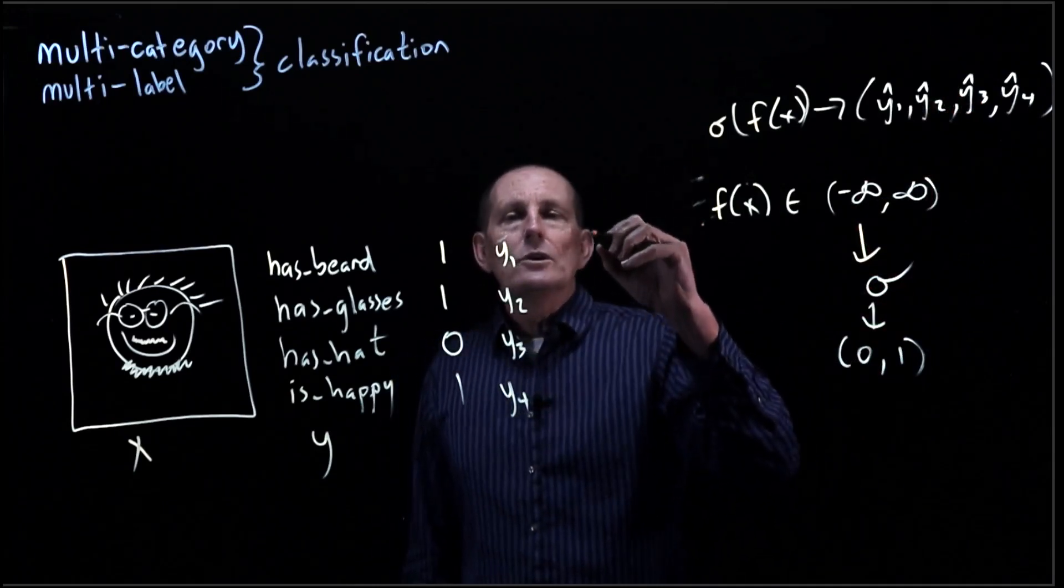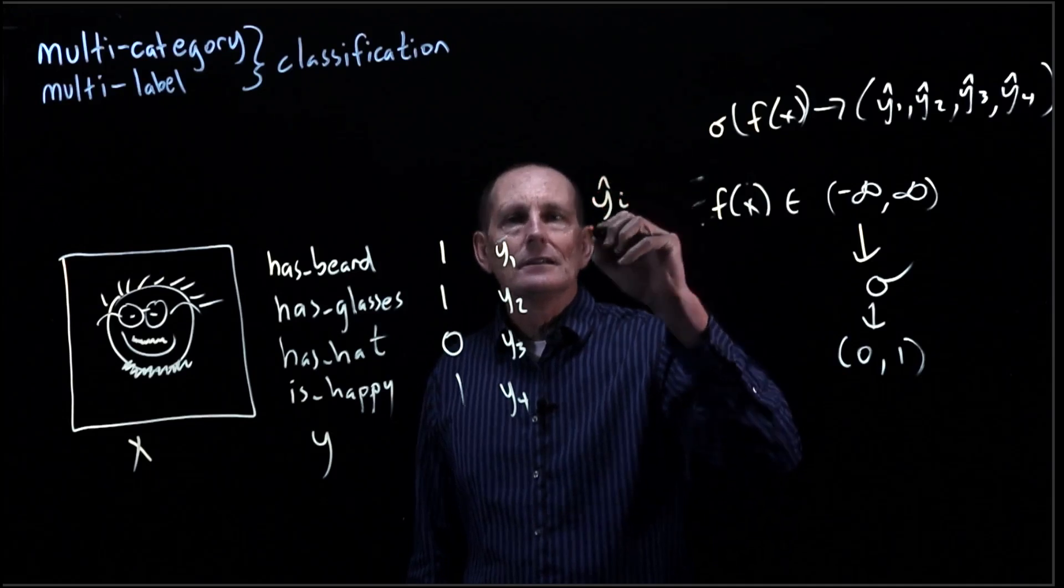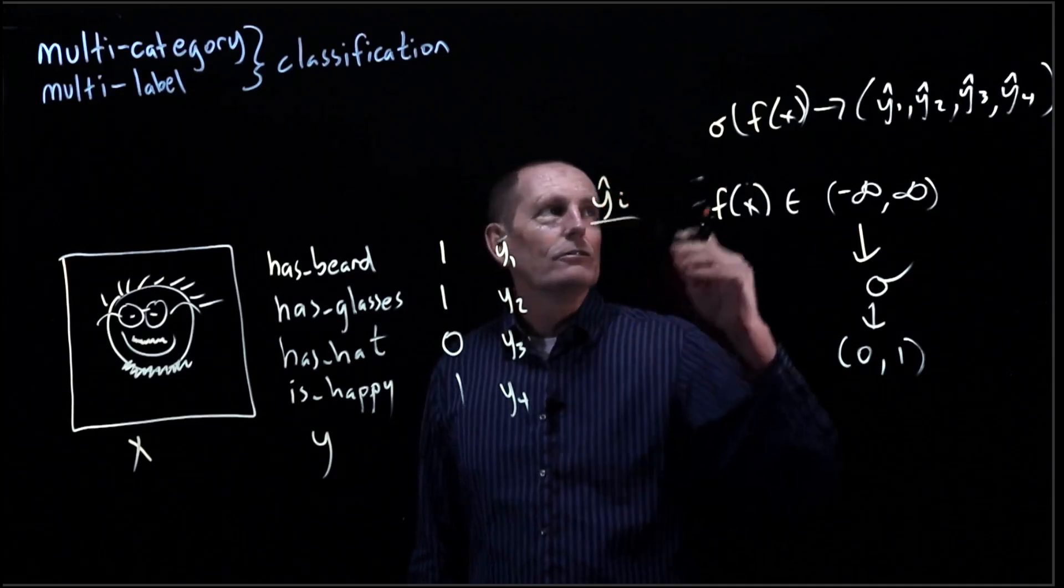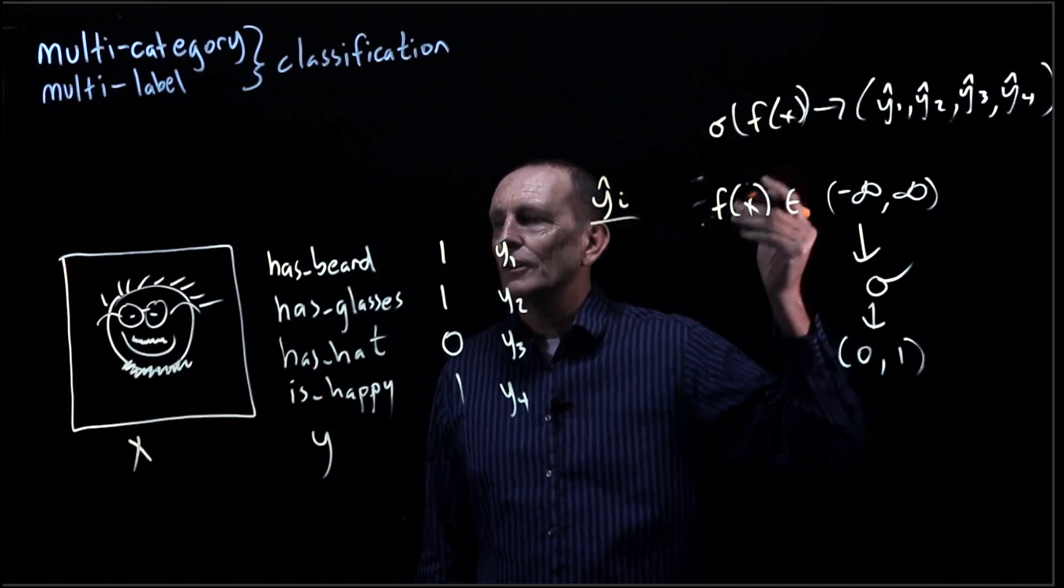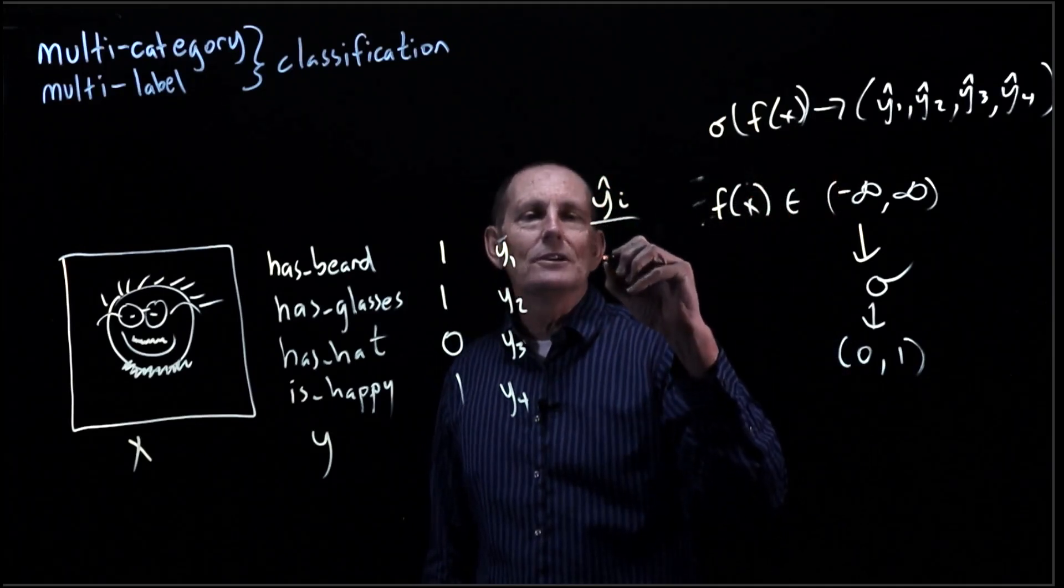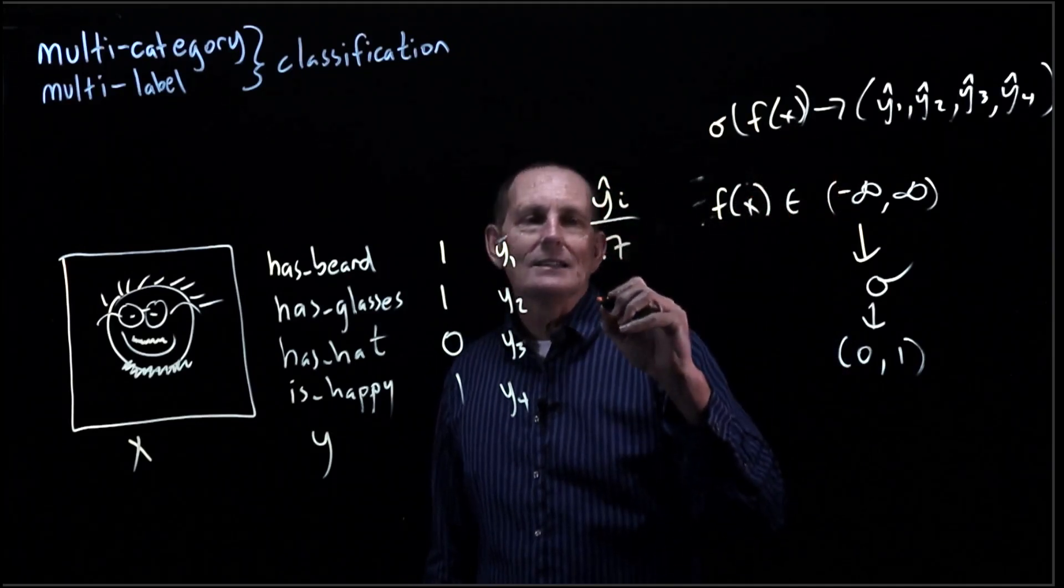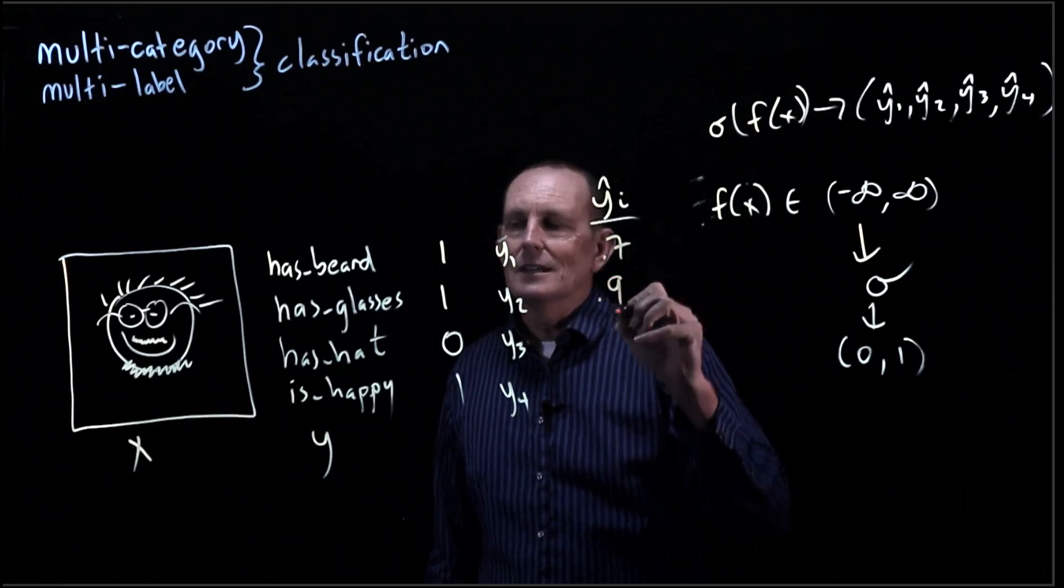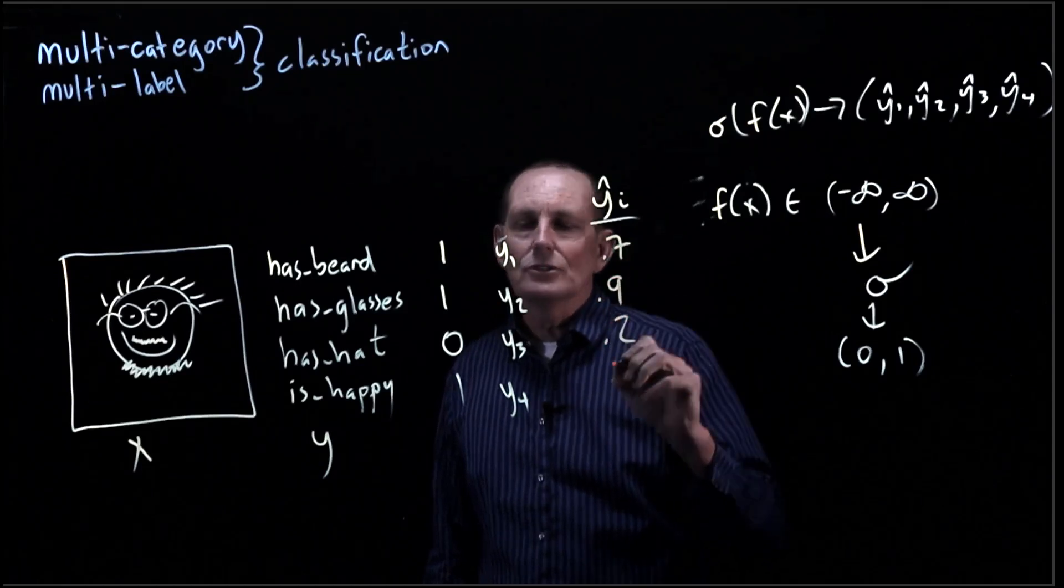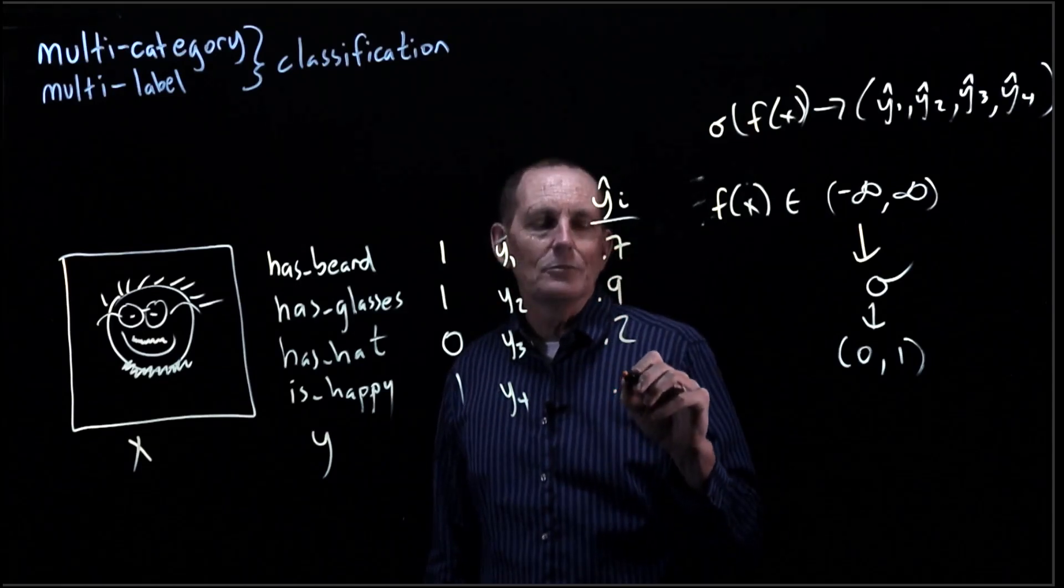So we know that if we look at our y hats, we might have, for a particular trained f so far, we might have a hat's beard of 0.7, and it has glasses of 0.9, and it has hat of 0.2, and it is happy of 0.8.